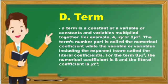The term's number part is called the numerical coefficient, while the variable or variables, including the exponent, is or are called the literal coefficients. For the term 8yz cube, the numerical coefficient is 8, and the literal coefficient is yz cube.